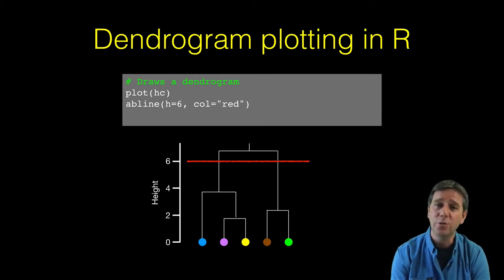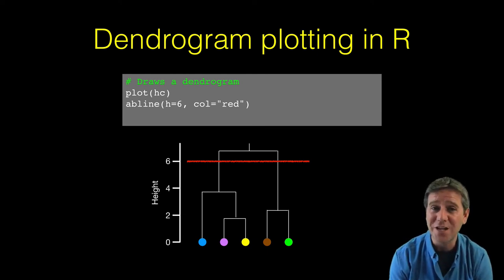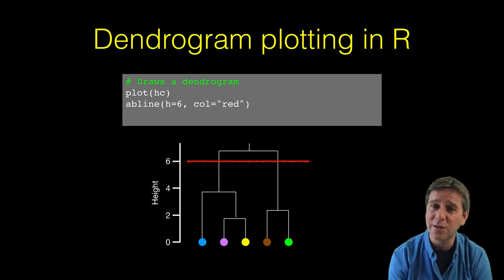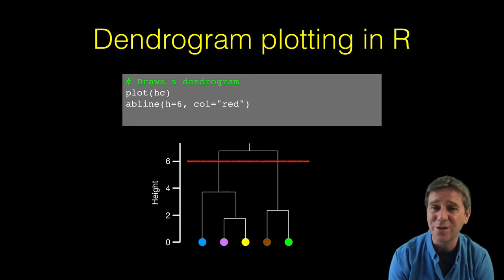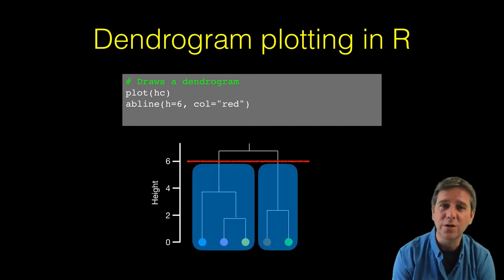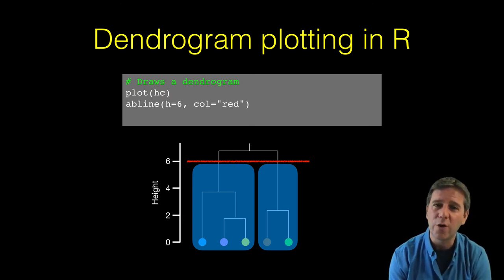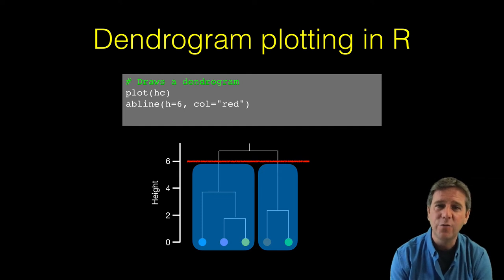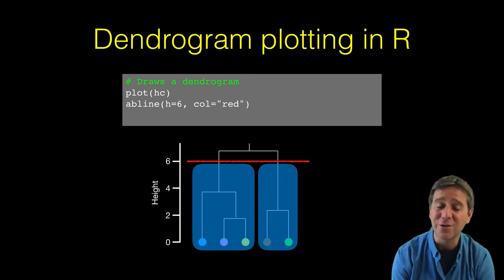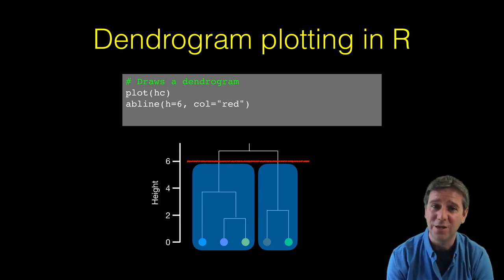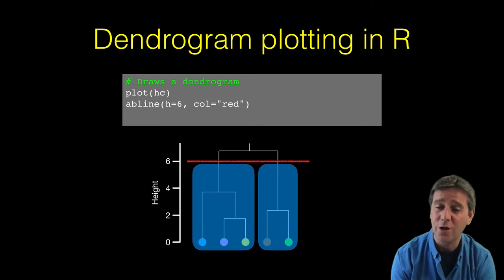For visualization purposes, we can draw a line across the tree using the abline function at a height of six in red. If we consider cutting across the tree at this point where I drew that red line, you'll be left with the dangling branches. We'll have two main branches, and all the leaves attached to those branches are the data points that will be considered within each cluster if we cut at this point.